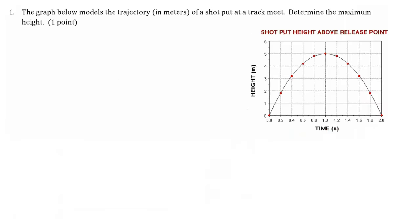To begin with number one, we are given a graph. It's modeling an object that goes through the air, goes up and then comes back down and hits the ground. We want to figure out what that maximum height is going to be. The maximum height refers to the largest Y value on this graph.